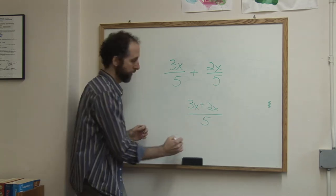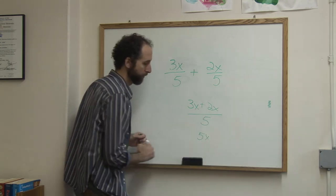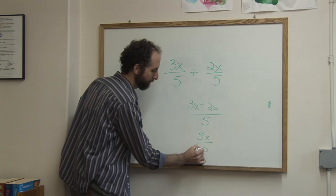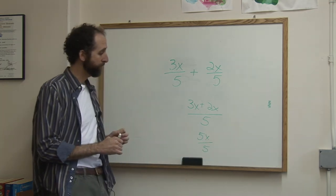Now 3x plus 2x is 5x, and we've got our common denominator of 5. So the answer is 5x over 5.